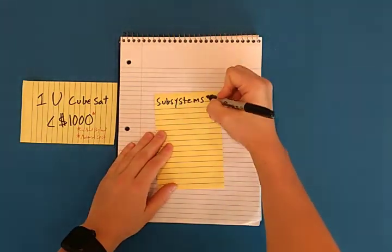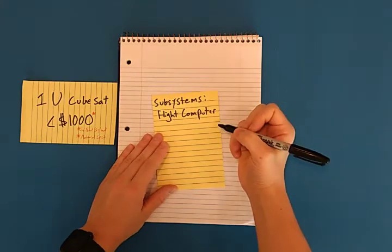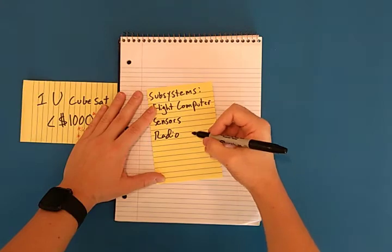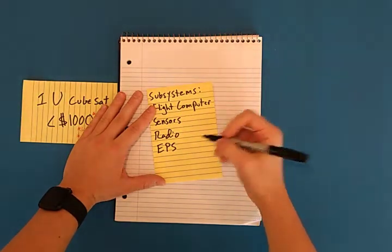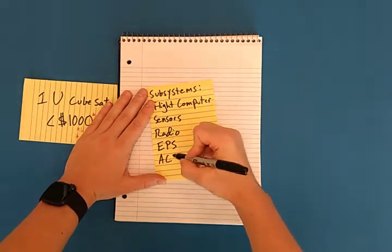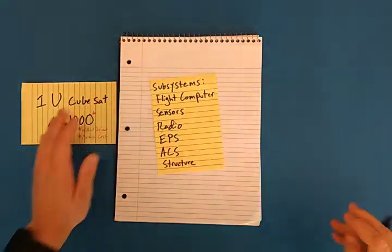The subsystems are the flight computer, sensors, radio for any sort of communications, electrical power subsystem, so that's solar power, batteries, and the like, attitude control system, and structure.